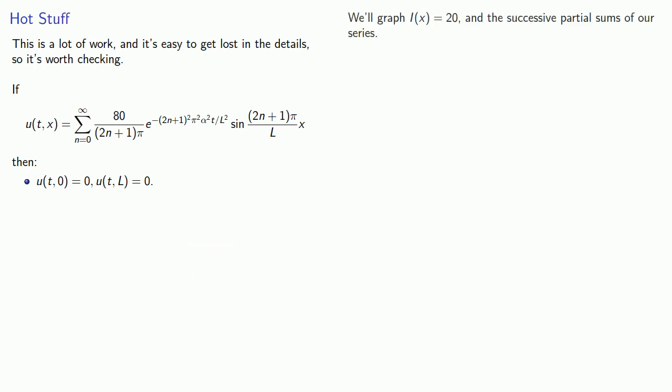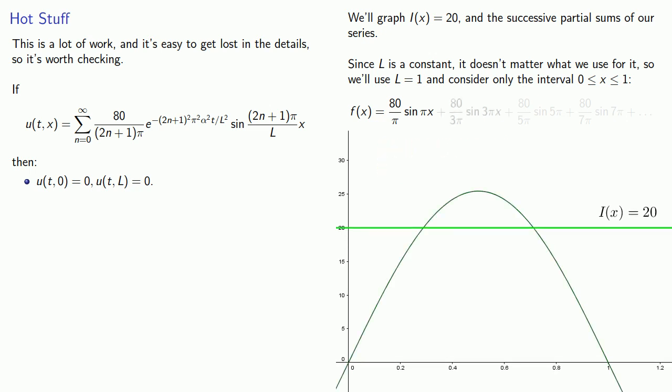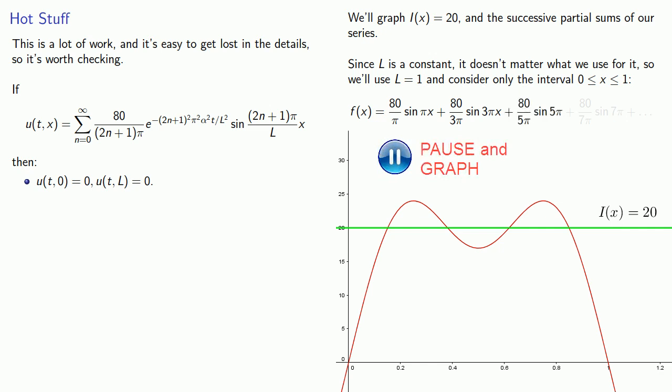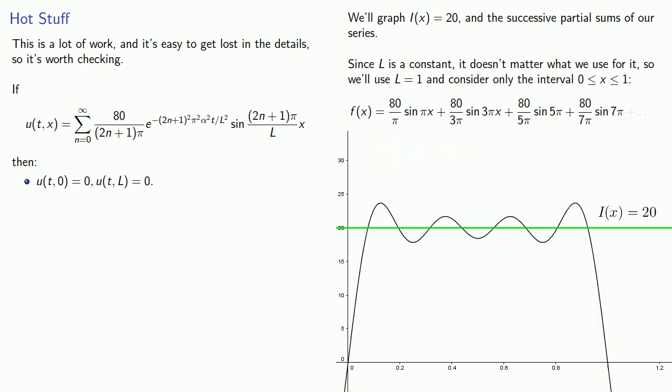We'll graph i of x equals 20 and the successive partial sums of our series. Since L is a constant, it doesn't matter what we use for it, so we'll use L equals 1 and consider only the interval for x between 0 and 1. So if t equals 0, our series becomes... Now if we consider some function f of x equal to just the first term of the series, we can graph it. If we include the second term of the series, then the third term, the fourth term, it certainly seems plausible if we include all the rest of the terms of the series, we will get convergence to i of x equals 20.